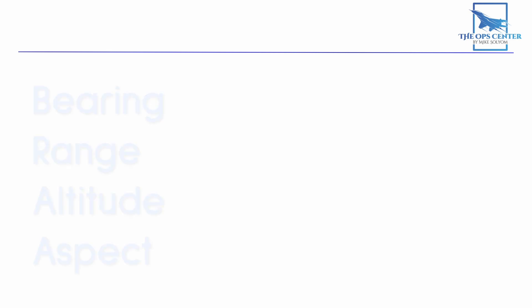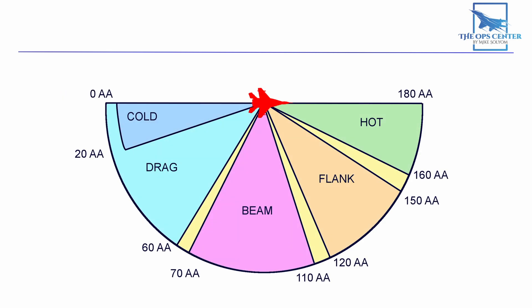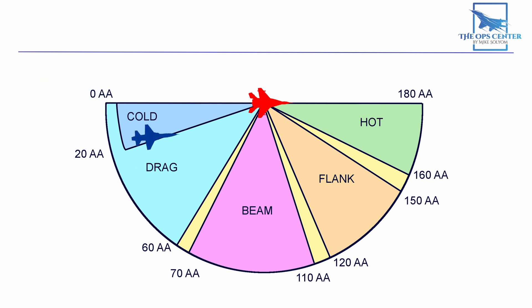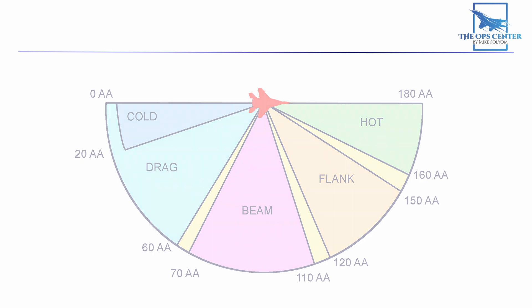Here's how that is visualized. If you were piloting a fighter here, then you would be in the target's hot aspect. This would be the beam aspect. These two aspects have some overlap, so you might hear either cold or drag — in other words, the target is dragging you behind it. One thing to remember about BRA calls is that they are specific to one aircraft.